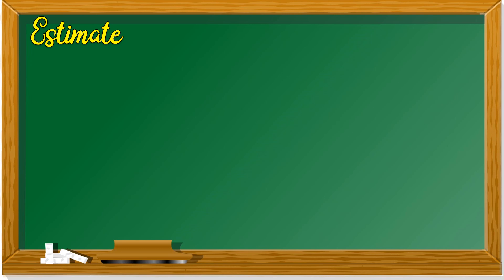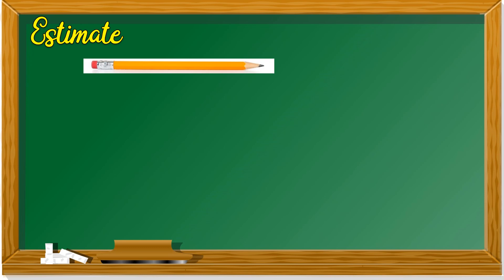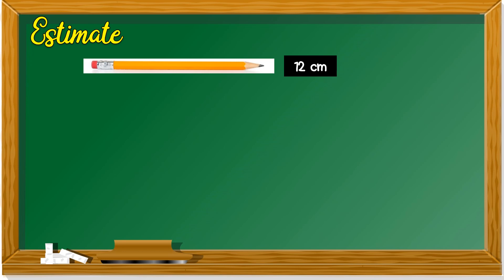When you estimate, you don't have a ruler with you or a measuring tape. Let's look at some examples. This is a pencil. Is it 12 cm or 80 cm? It's 12 cm. You estimate it between 12 and 80 — 12, because 80 is too long.